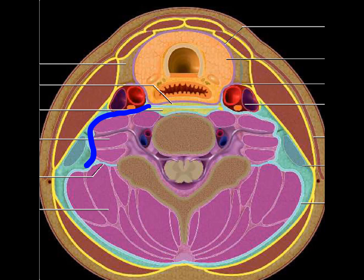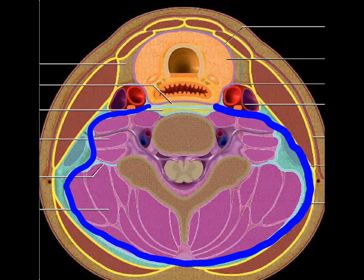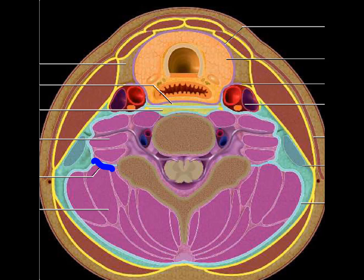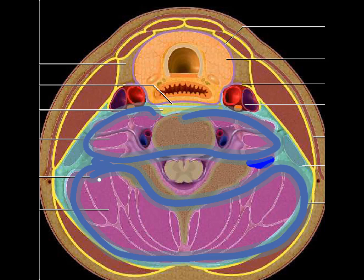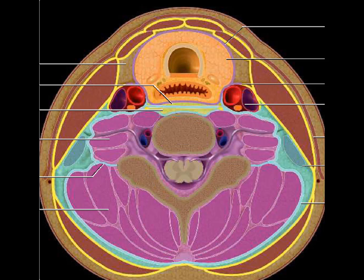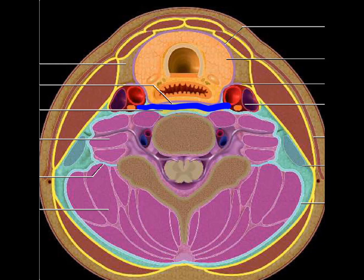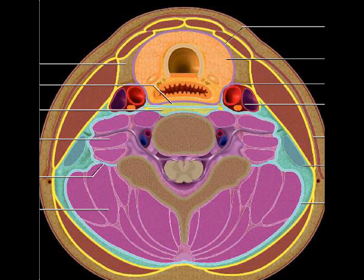Surrounding the vertebral body and its muscles is the deep layer of the deep cervical fascia, divided by a slip of fascia into pre-vertebral and para-vertebral components. The space behind the visceral fascia is the retropharyngeal space; behind that is the alar fascia, and behind the alar fascia is the danger space. Both the retropharyngeal and danger spaces extend up to the T3 vertebral body.